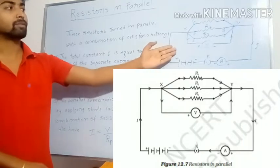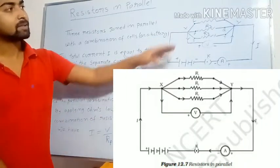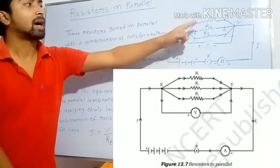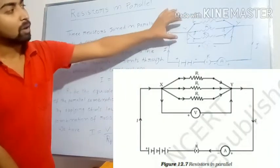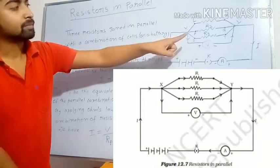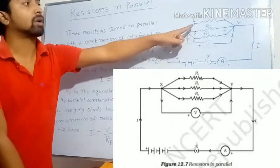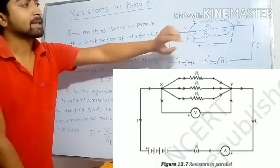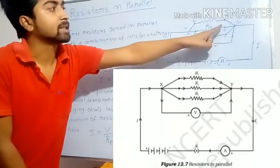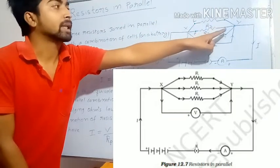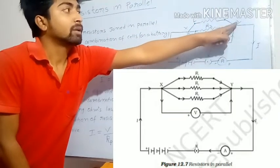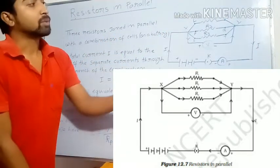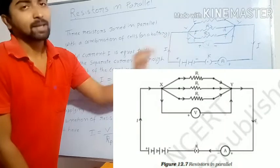In this diagram we can see that there are three resistors: R1, R2, and R3. One end of each resistor is combined together and joined to point X, and the other ends are combined together and joined to point Y. So these three resistors are connected between two points of this circuit.